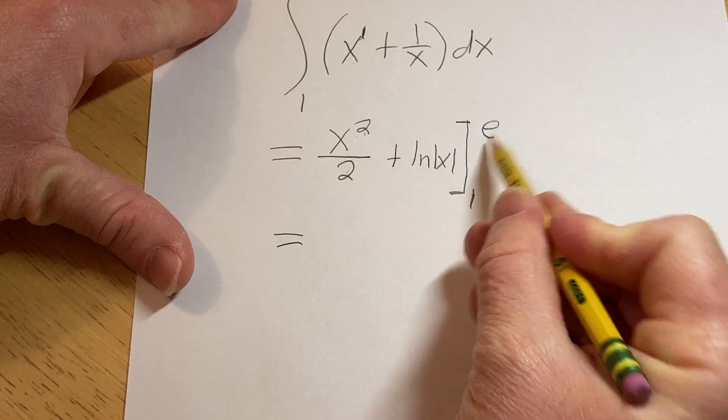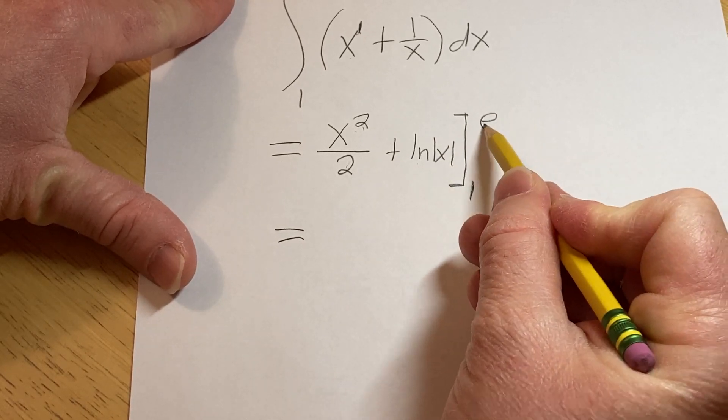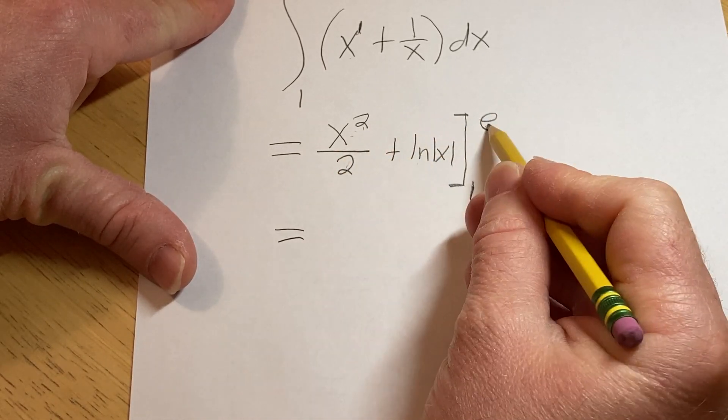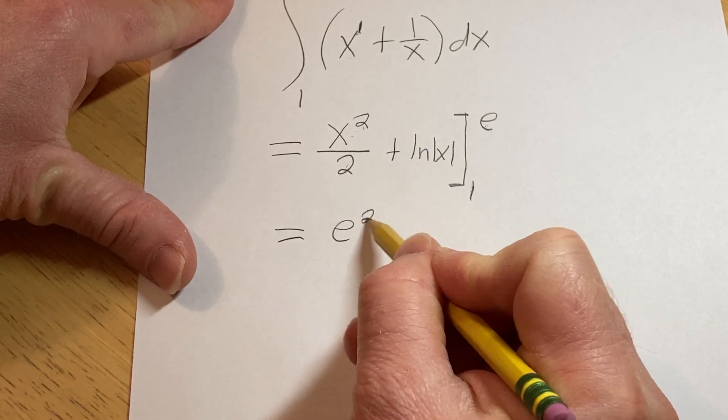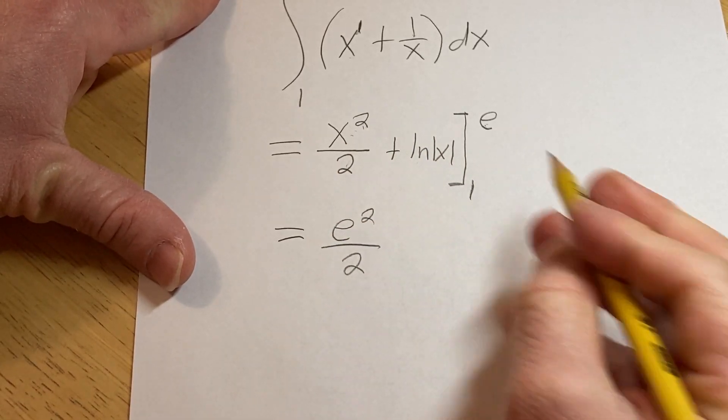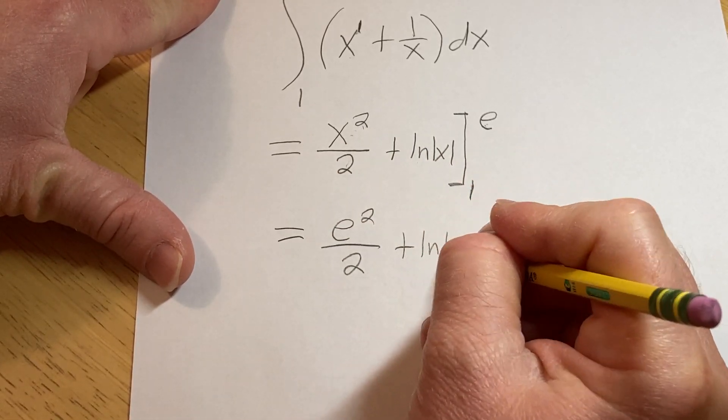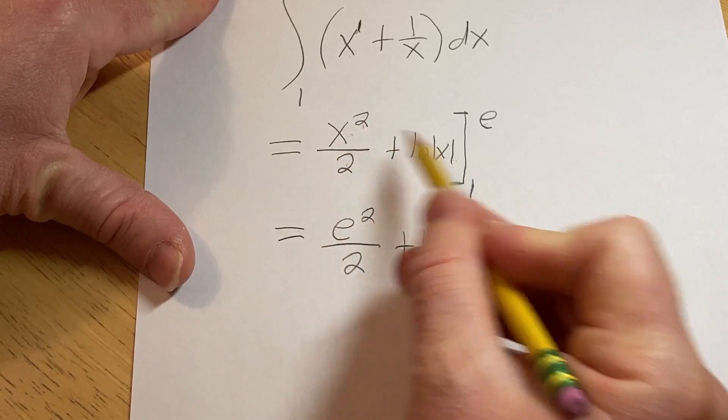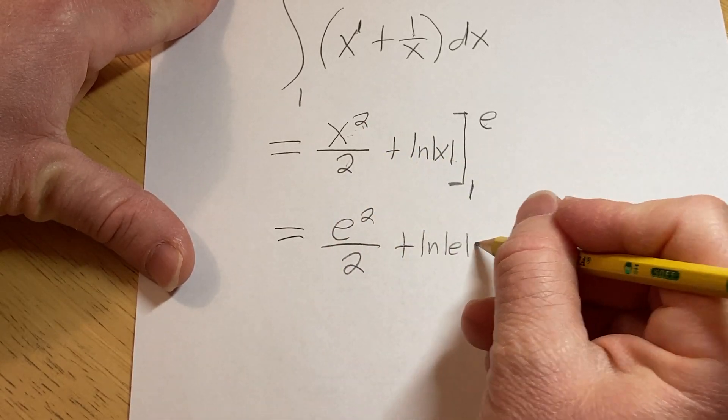So the rule says that you first plug in the top number. You plug in the top number for all the x's so it'll be e squared over 2, plus the natural log of the absolute value of e. That's just putting the e where all the x's are. Then minus,